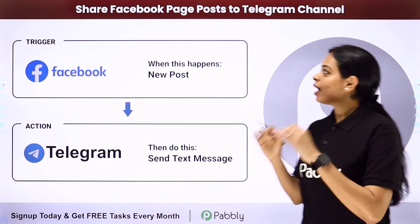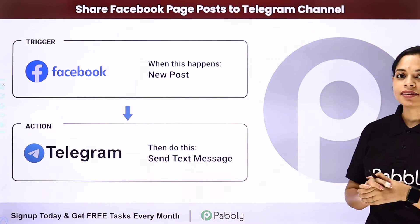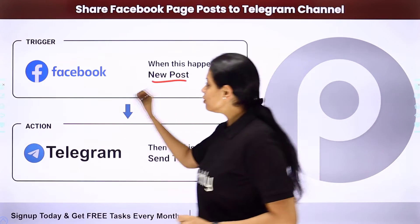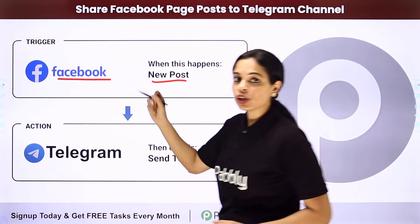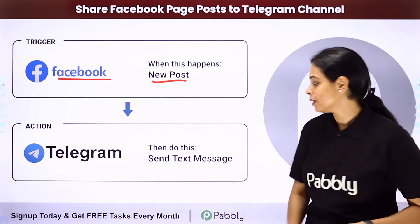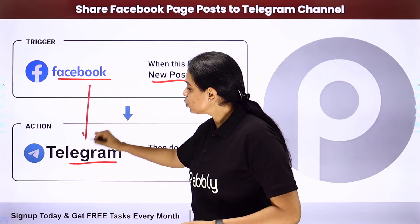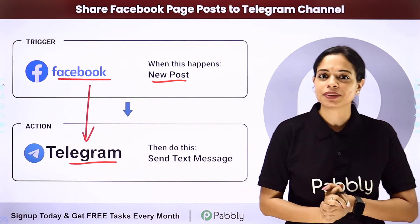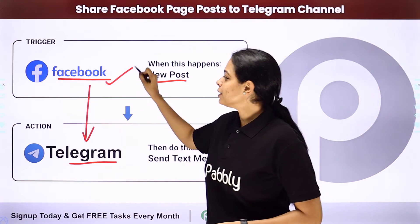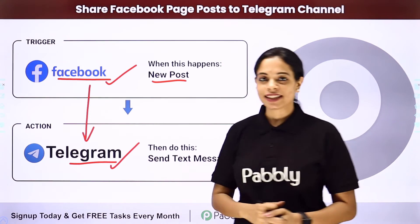In this video, we are going to see how to share a Facebook page post to a Telegram channel. So let's say that every time there is a new post on your Facebook page, you want that same post to be shared or reflected on your Telegram group. For this, you will have to integrate the two applications, and the same thing can be done using Pably Connect software. Your trigger application will be Facebook Pages and your action application will be Telegram.